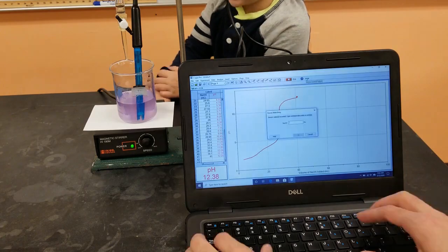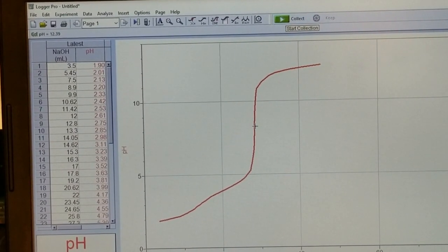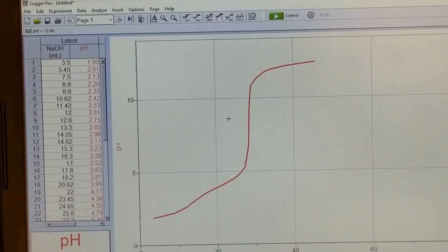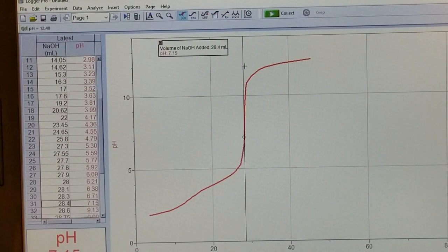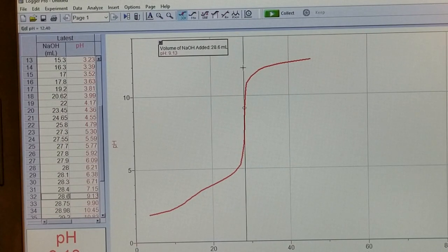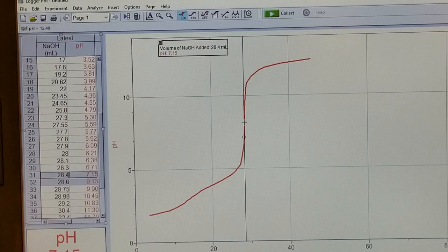And so the way to analyze this graph, because we didn't use an indicator for the purpose of doing this titration, we used the indicator just kind of as some nice observations. The way that you do this is you're going to examine and find that midpoint of that steep slope. And it looks like it was between 28.4 and 28.6 milliliters of base added, so we can call it 28.5 milliliters of base for our calculations.